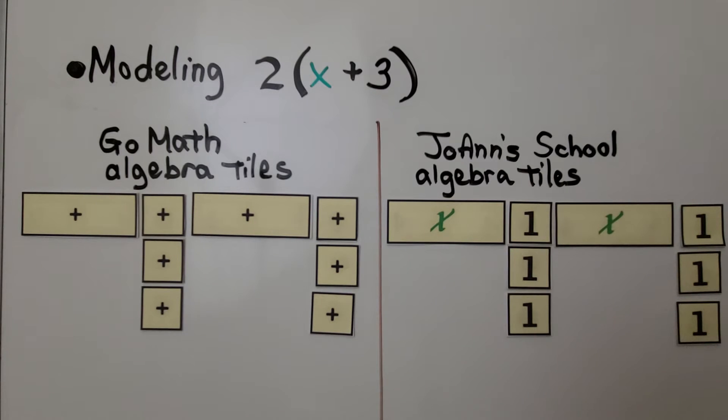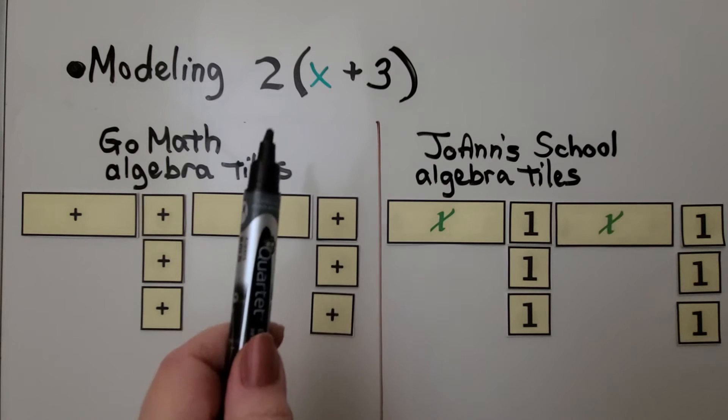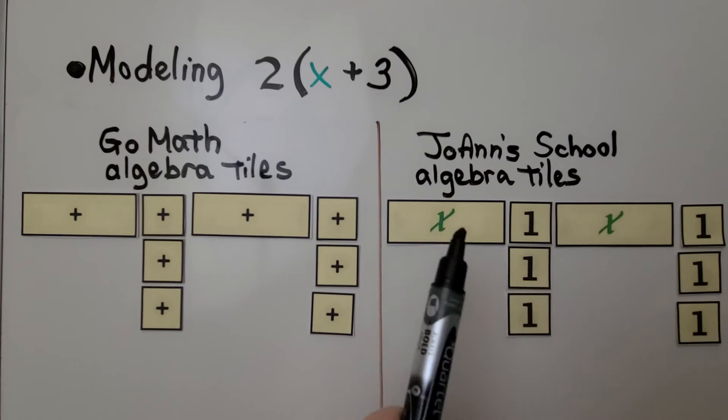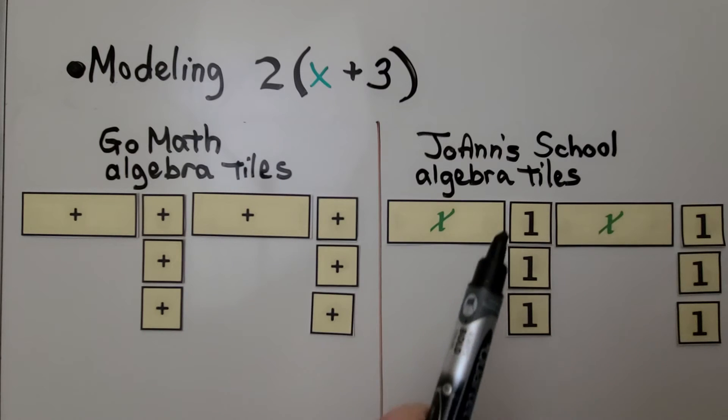We can see that we have two times x, we have two x's, and two times three is six, we have six ones, that's six.